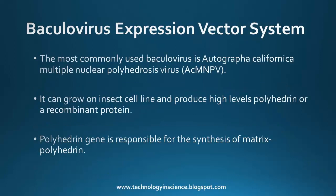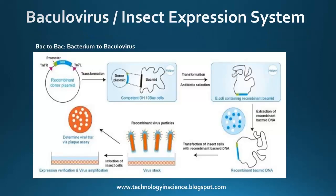The most commonly used baculovirus is Autographa californica multiple nuclear polyhedrosis virus (AcMNPV). It can grow on insect cell lines and produce high levels of polyhedrin or recombinant protein. The polyhedrin gene is responsible for the synthesis of matrix polyhedrin.